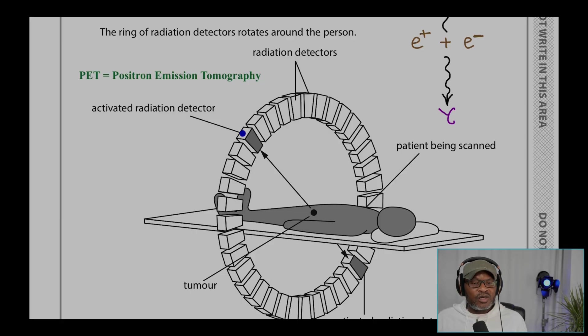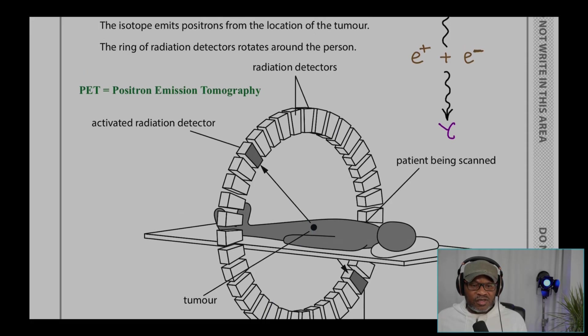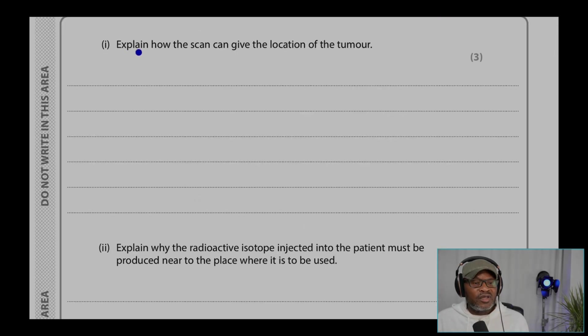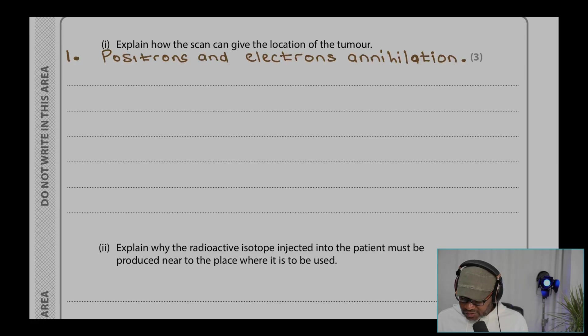So that gamma is what will be detected by these detectors here. Hence, that's why you're rotating these to detect a gamma coming out there and another gamma coming out there, or coming out there and coming out there. So that's what this is doing. Part one, explain how the scan can give the location of the tumor.